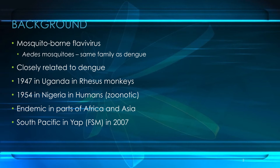It was first isolated in Aedes africanus — that's the type of mosquito — in the same forest in 1948, and then it was isolated in humans in Nigeria in 1954. So you can see it made a zoonotic jump fairly rapidly, from being found in rhesus monkeys in 1947, jumping over into the human population by 1954.